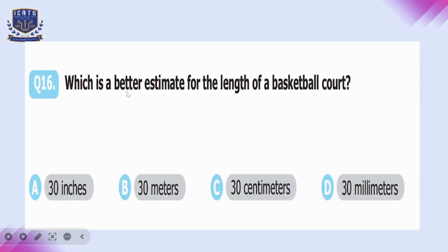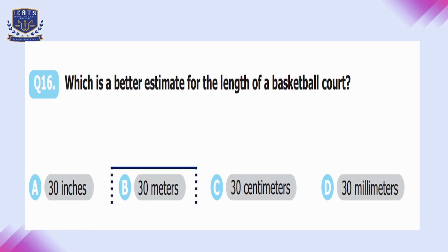Question number sixteen: which is the best estimate for the length of a basketball court — 30 inches, 30 meters, 30 centimeters, or 30 millimeters? Millimeters and centimeters are far too small. The correct answer is 30 meters, so option B is correct.